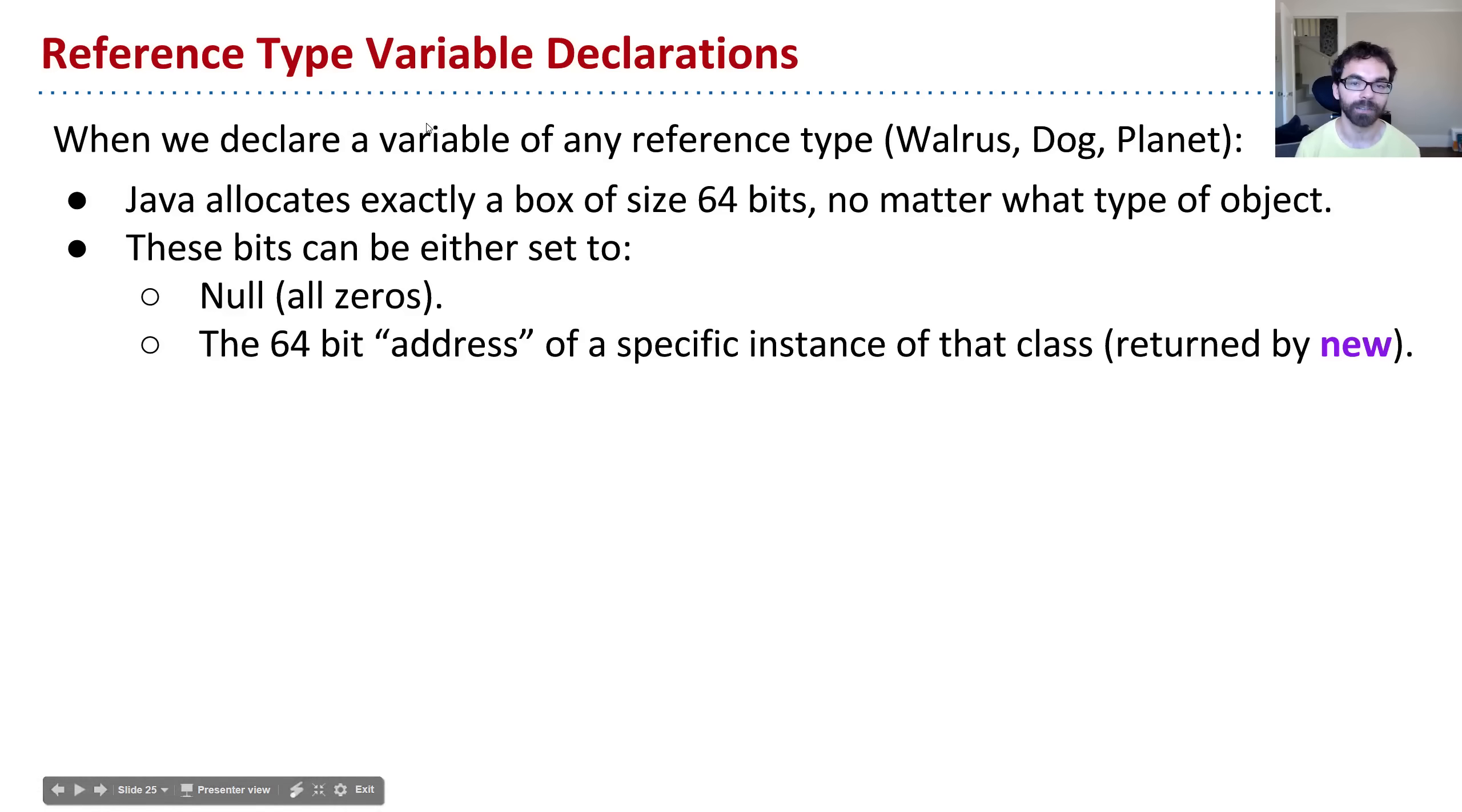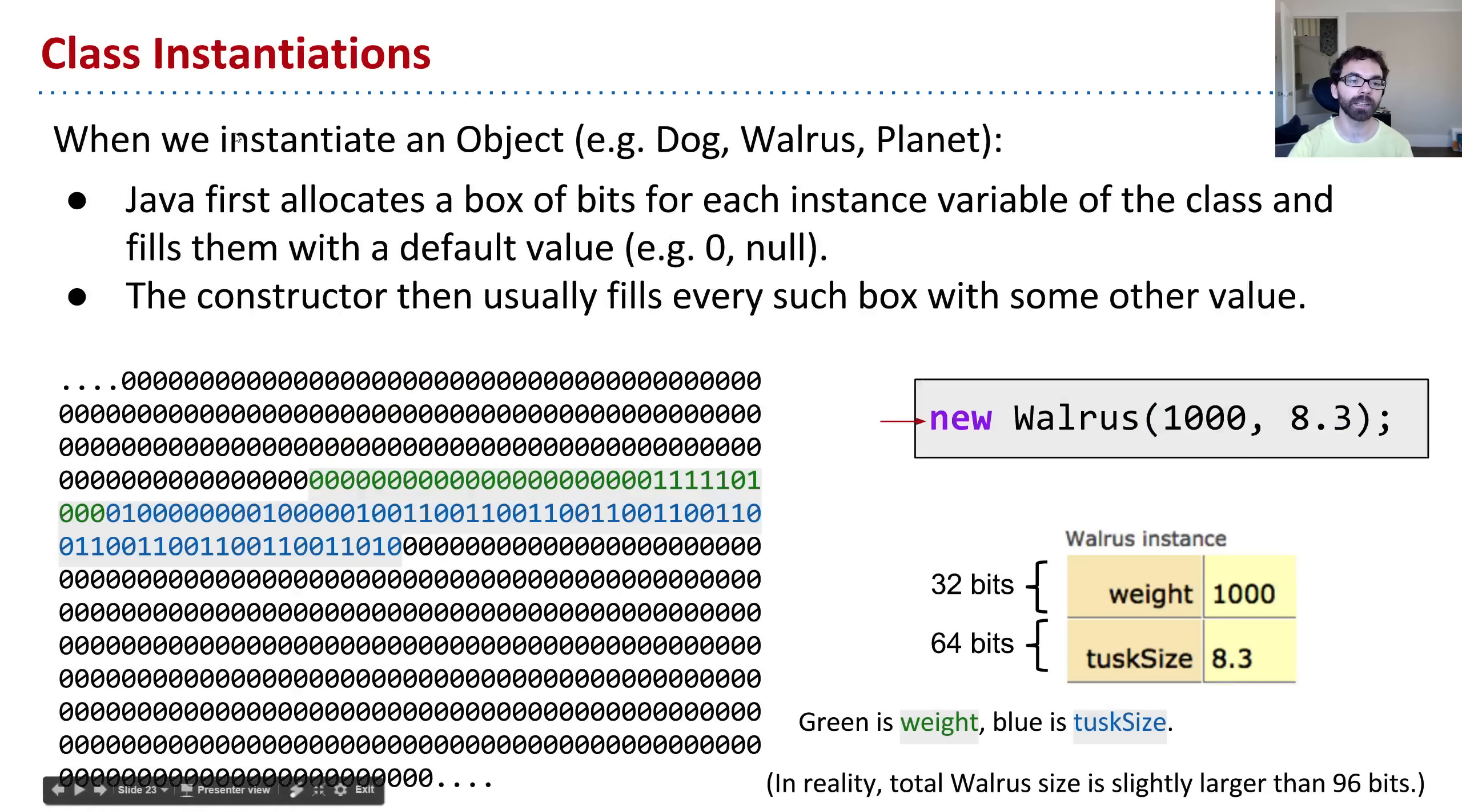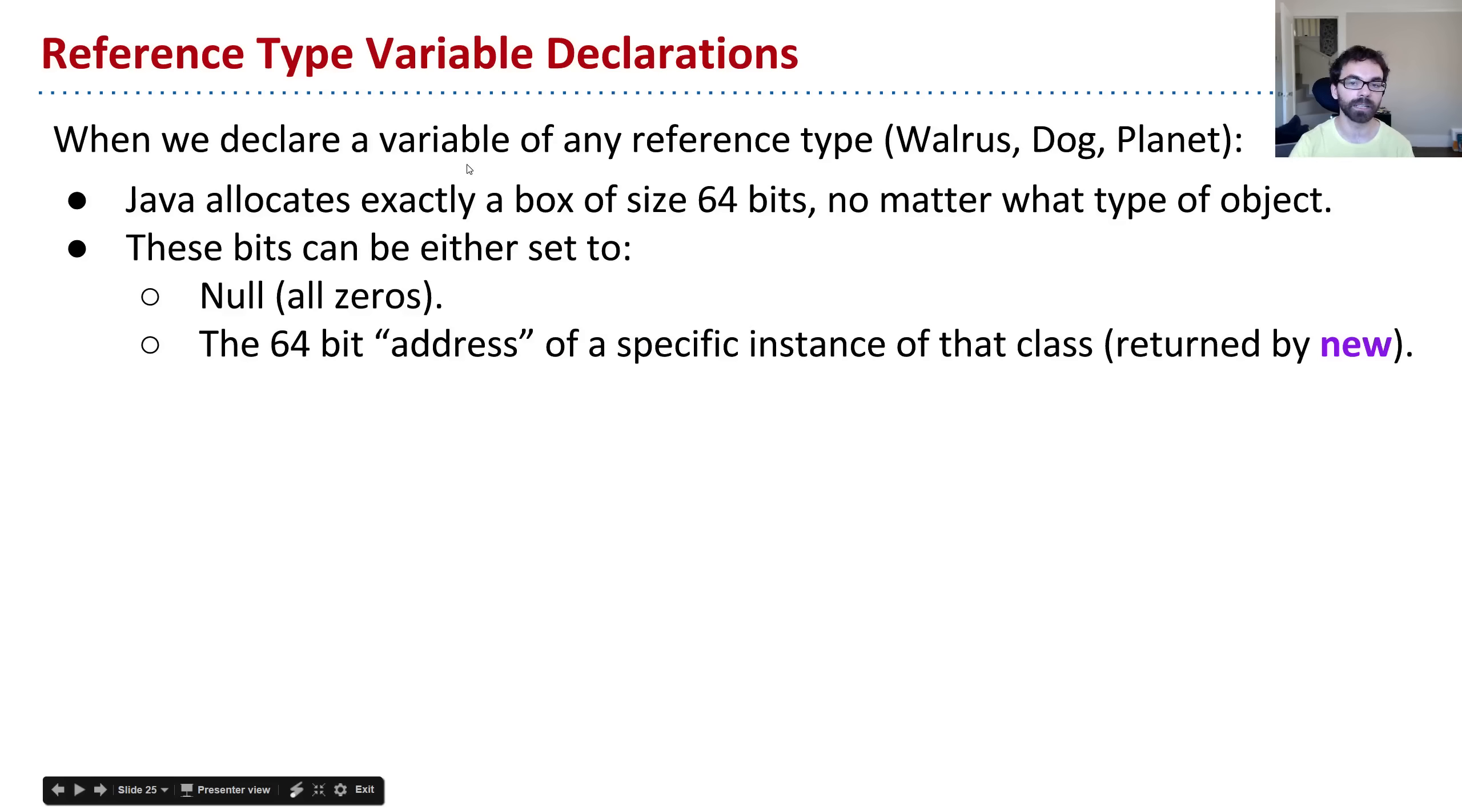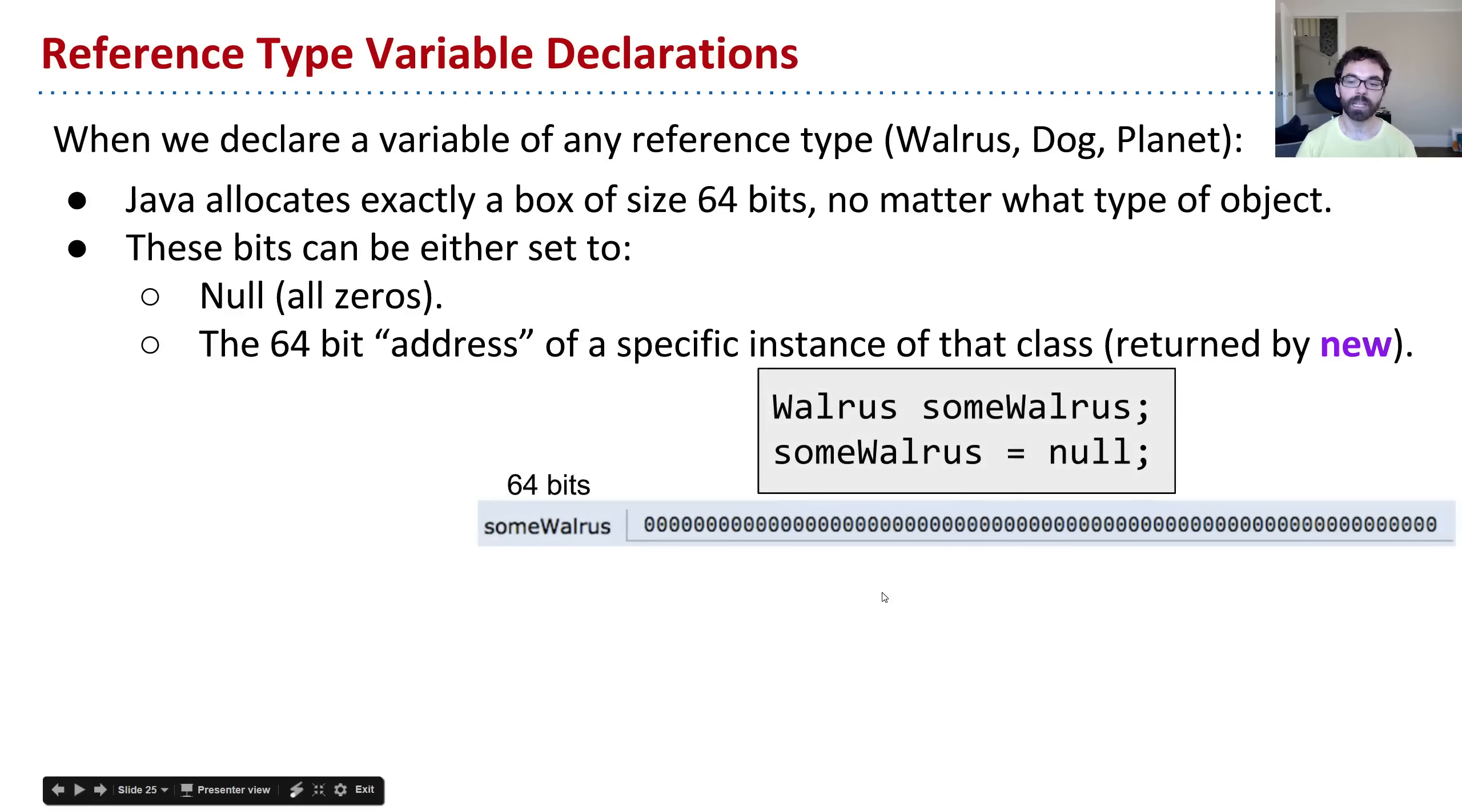So what? Well, let's talk a little bit about the declaration of a variable that's a reference type. So before we've been talking about instantiation, how new works. Now let's talk about declaration. So if I have a piece of code that declares that a walrus exists, or that a dog exists, or that a planet exists, what Java will do is it will allocate a box of exactly 64 bits, no matter what type of object. It's a reference type. That's just what's going to happen. And then these bits can either be set to null, that is all zeros, or it could be set to the address of a specific instance of that class as returned by new. So let's see this very simple example. If I say walrus someWalrus, and then say someWalrus equals null, well, that first line creates a box of 64 bits, and the second line, equals null, sets it all equal to 0 as a marker to say, well, it's nothing, right? It's null.